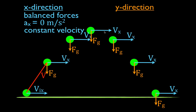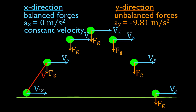In the y direction, there's only one force acting on the object, so the forces cannot be balanced — they're unbalanced — and if they're unbalanced, the object is accelerating. In two-dimensional projectile motion, in the y direction, the object is really experiencing free fall. The acceleration equals the acceleration due to gravity during free fall. The acceleration in the y direction is equal to minus 9.81 meters per second squared, because the acceleration is in the negative direction.